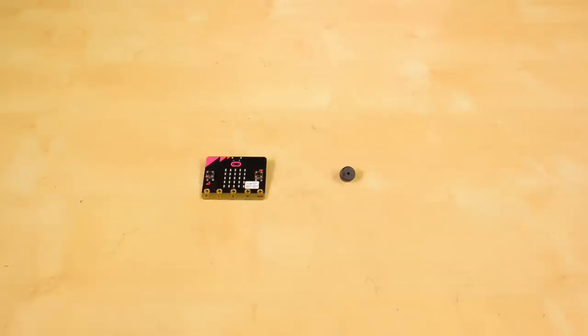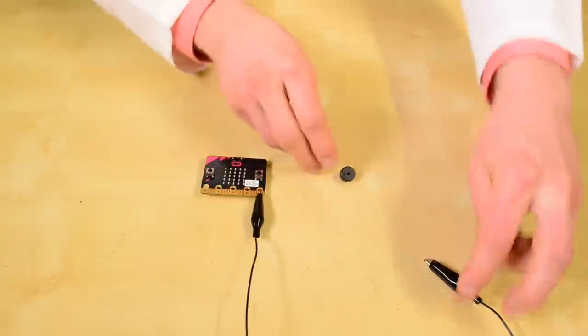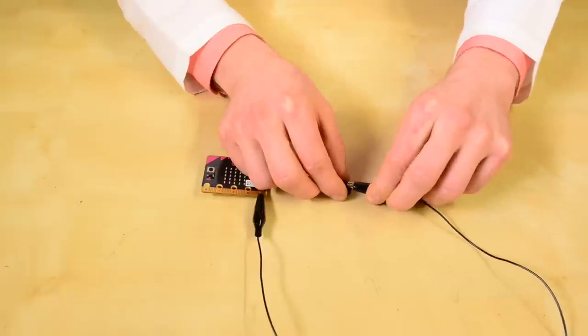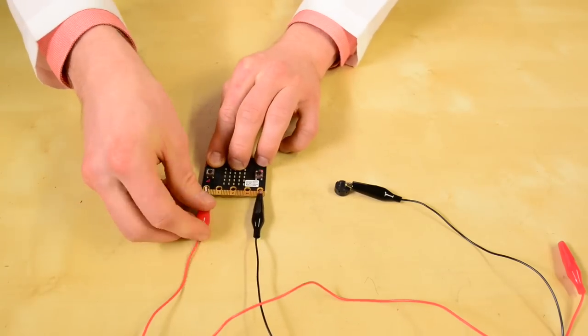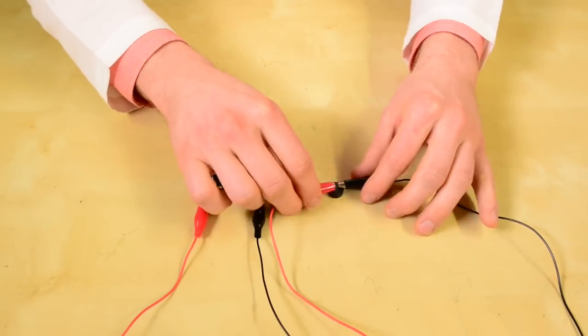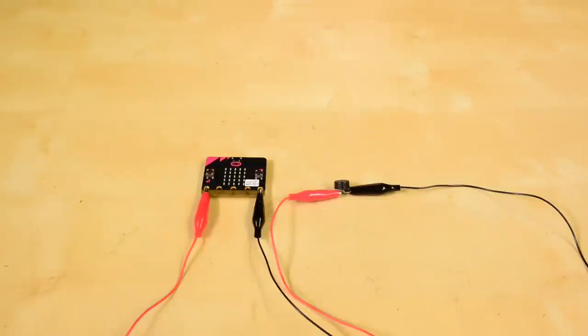Note that many of these tiny speakers have a marking showing which pin is positive. Connect an alligator clip to the ground pad on the microbit and connect the other end to the negative pin of the speaker. Use another alligator clip to connect pin 0 to the positive pin on the speaker. We're going to upload a different program to the second microbit, so plug it into your computer using a USB cable.